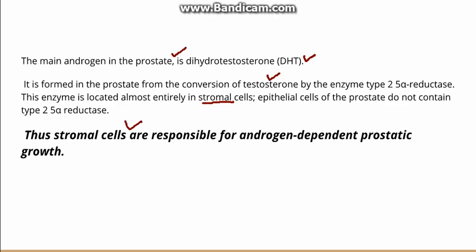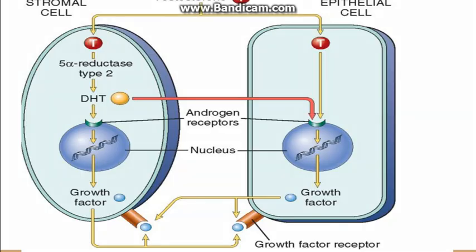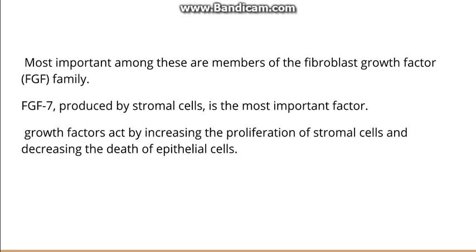In this diagram, there is a stromal cell and an epithelial cell. Testosterone enters the stromal cell and is converted by 5-alpha reductase type 2 into dihydrotestosterone. This DHT will further act upon the nuclear androgen receptors either in the stromal cell or in the epithelial cell, and they will further produce growth factors. These growth factors act upon growth factor receptors to mediate the effect. The most important growth factors are the fibroblast growth factors, and among them FGF7, which is produced by stromal cells, is a very important factor.